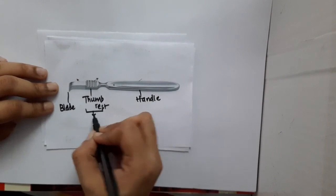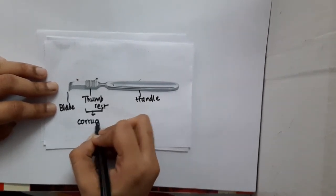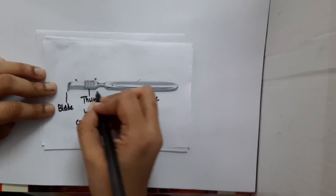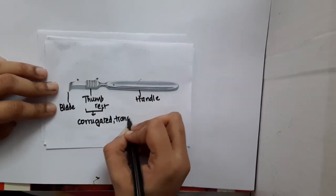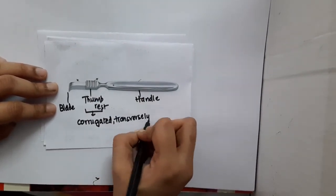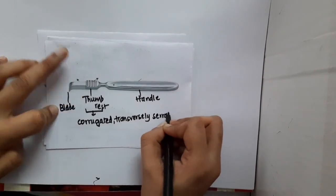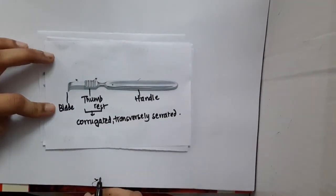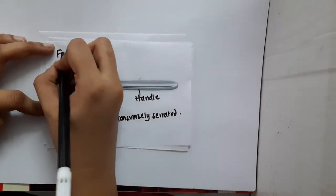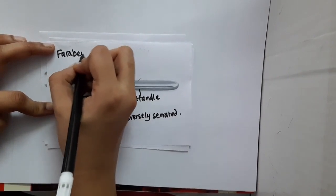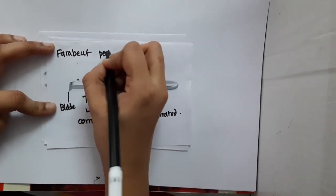If you see the thumb rest, you will see that it is corrugated and it is transversely serrated. The serrations are present - you can see the serrations clearly, right? So what is this? This is Farabeuf periosteal elevator.